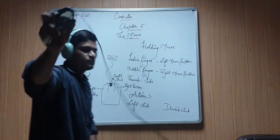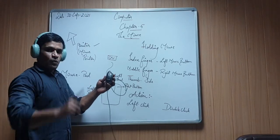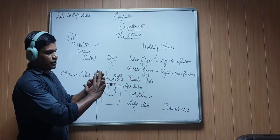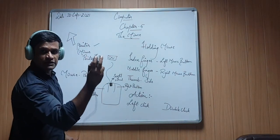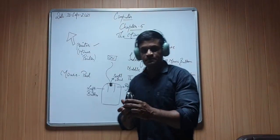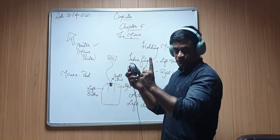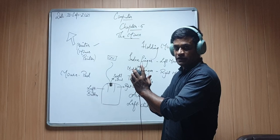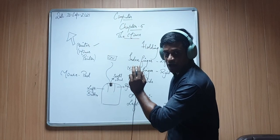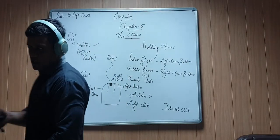I will show you in the practical. This is the mouse. I am a right hander, so my index finger is on the left button, my middle finger on the right button, and my thumb on the side. This is how right handers hold the mouse. For left handers, similarly, the index finger goes on the left button and the next finger on the right. This is how we hold the mouse.